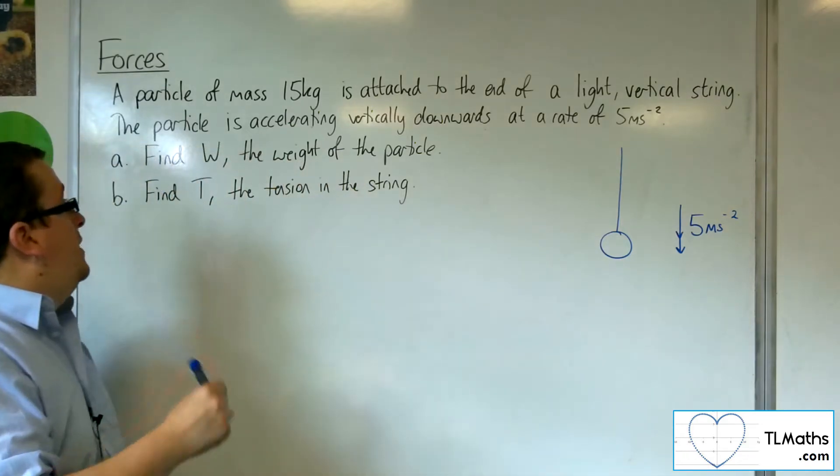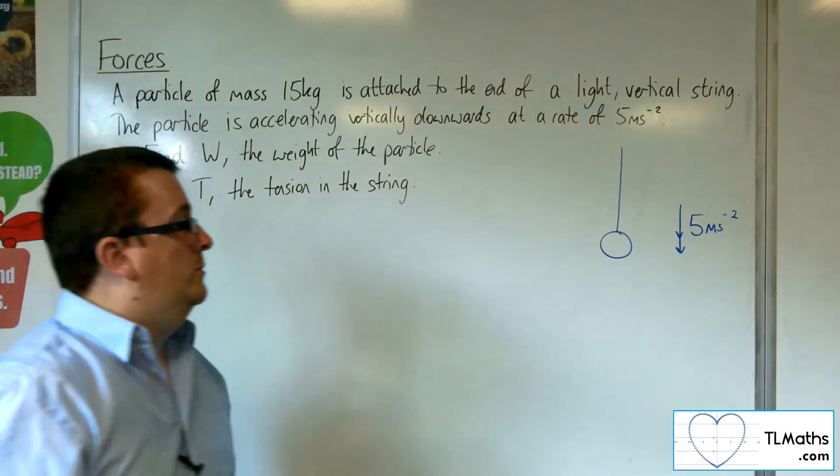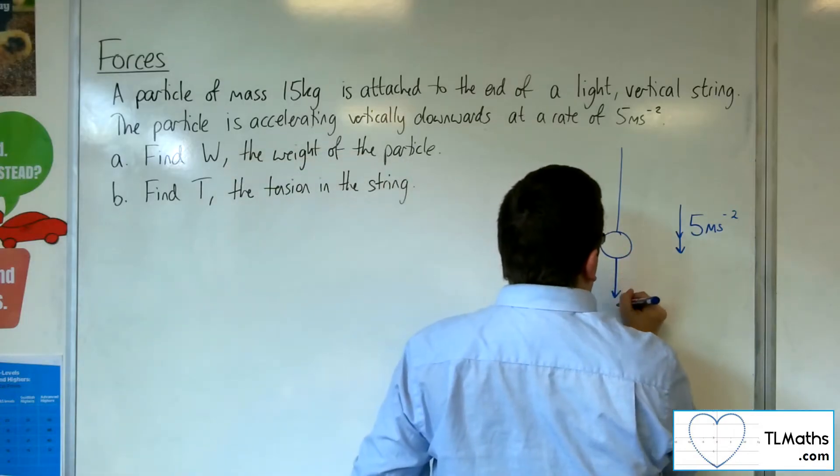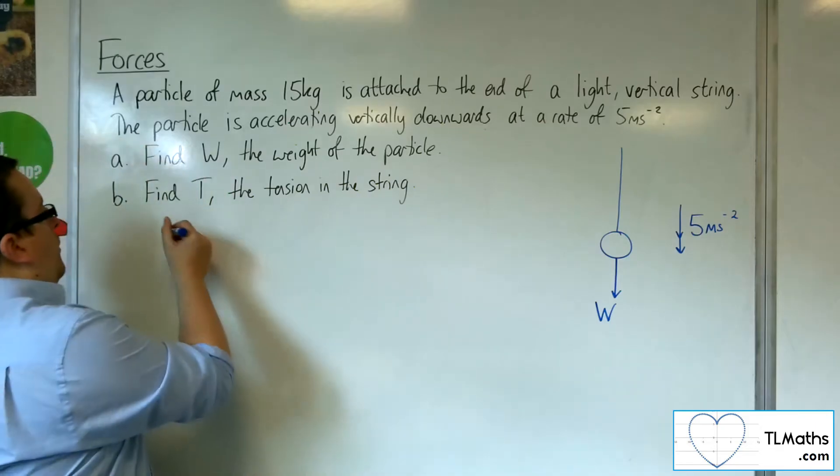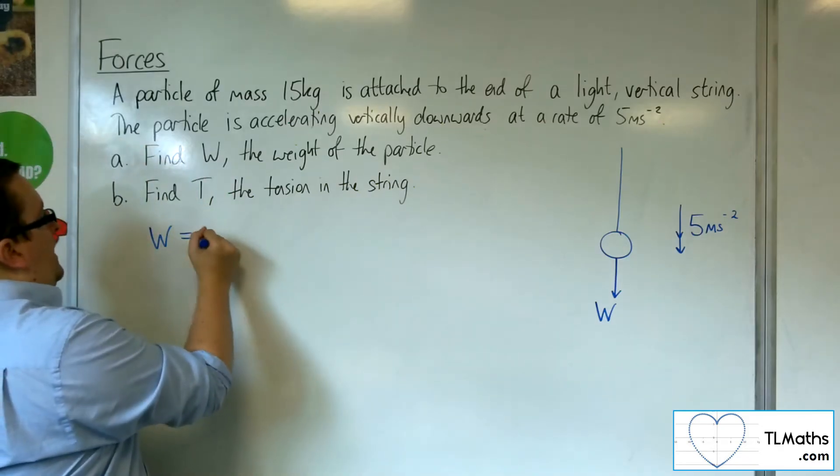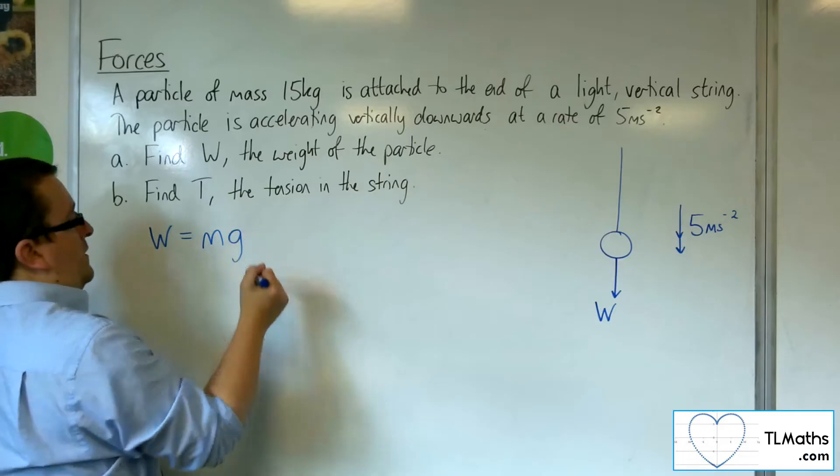We're first asked to find W, the weight of the particle. The weight of the particle is going to work vertically downwards. We know that the weight of a particle is equal to its mass times gravity.